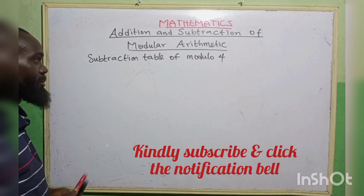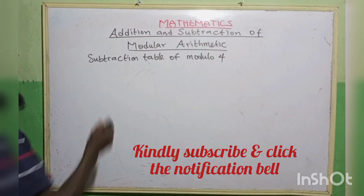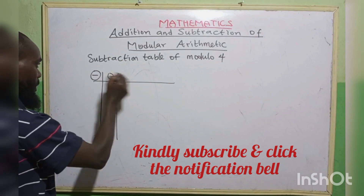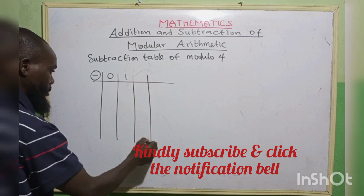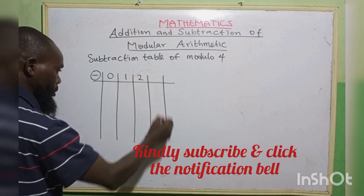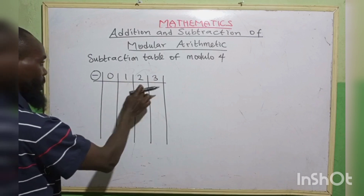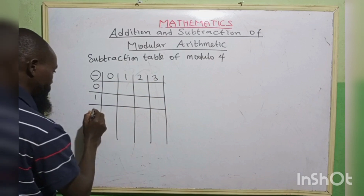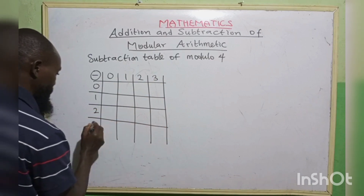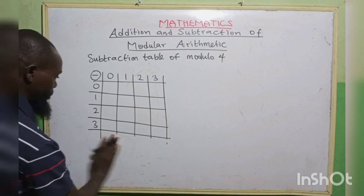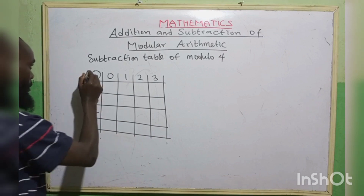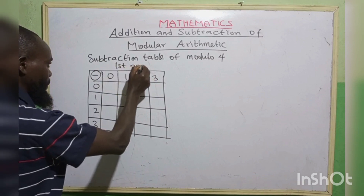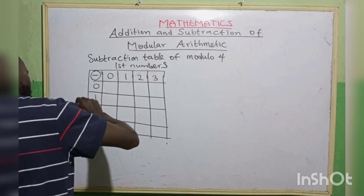The next one is the subtraction table of modulo 4. We use a special sign to show subtraction. The first number is 0, 1, 2, 3, and the second number is also 0, 1, 2, 3.